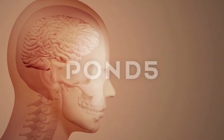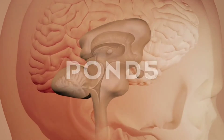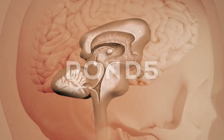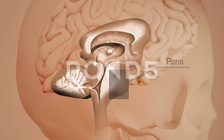A specialized center present in the medulla region of the brain called the respiratory rhythm center is primarily responsible for this regulation. Another center present in the pons region of the brain called the pneumotaxic center can moderate the functions of the respiratory rhythm center.